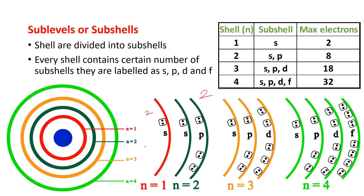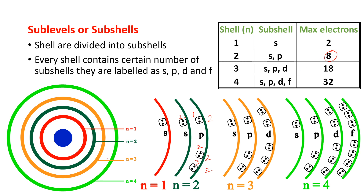Now for n=2, the second energy level has two subshells: s and p. In the s subshell there is only one orbital, and in the p subshell there are three orbitals, each holding two electrons. So p has 2+2+2 = 6 electrons, plus 2 electrons in s, giving a total of 8 electrons. The maximum electrons accommodated by the second shell is 8, with two subshells: s and p.